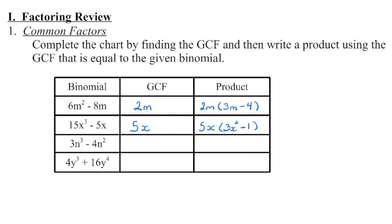Is there a number other than 1 that divides evenly into 3 and negative 4? No, there isn't, so we don't have a number. But look at the variables: n cubed and n squared. The largest variable that will divide evenly into both terms is n squared. So we pull out an n squared. Then n squared times what gets us back to 3n cubed? We need a 3 and one more n — 2n's plus 1n is 3n's. And n squared times what gets us back to negative 4n squared? It is going to be negative 4.